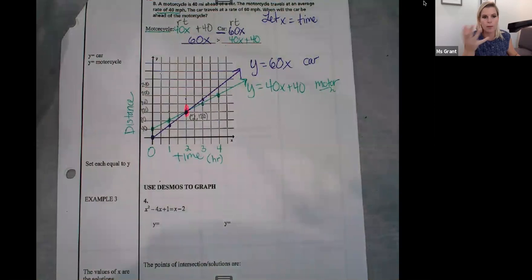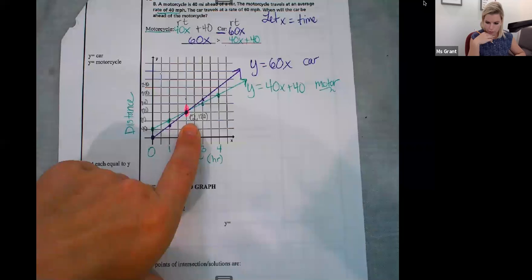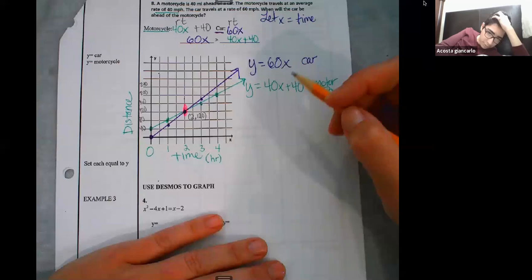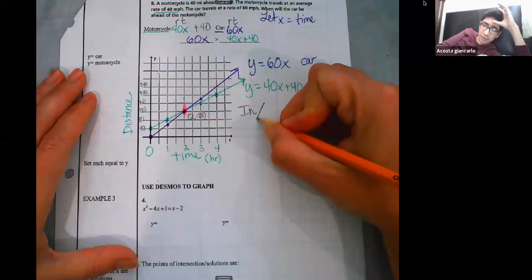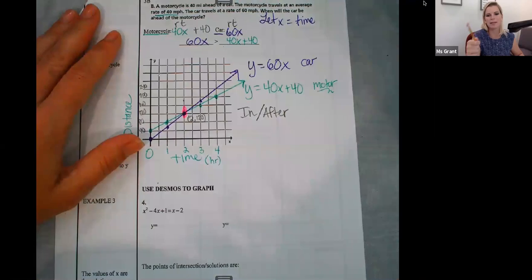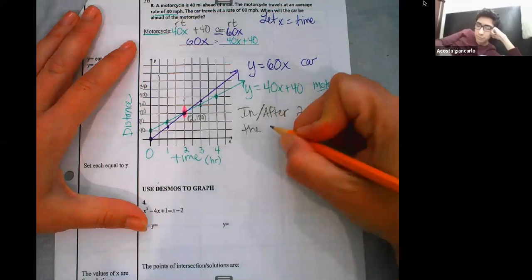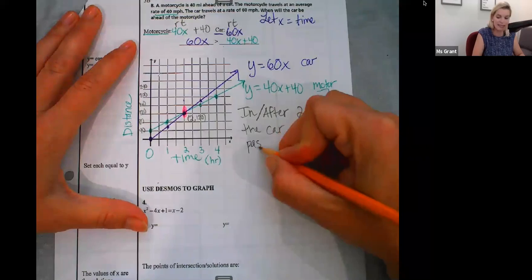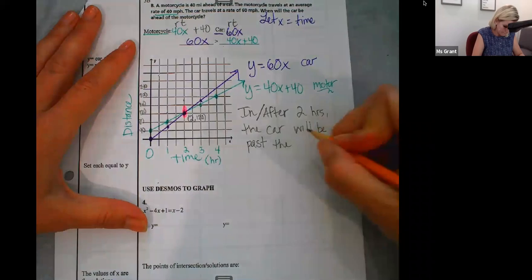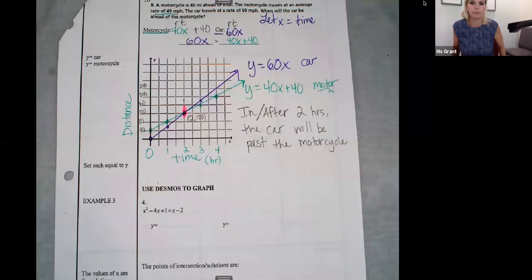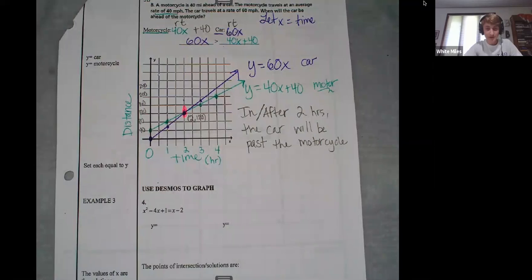What does that mean for my answer? I have to write my answer in a sentence form. I only care about my x point. Rono, remember? In two hours the car will be the same, like we will catch up to the motorcycle. Yeah, I care about when it's going to be past it. So I really want them after two hours. The car will be past, P-A-S-T, not S-S-E-D, the motorcycle.